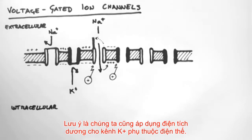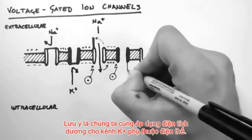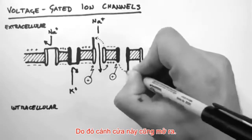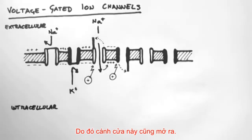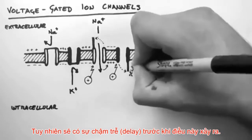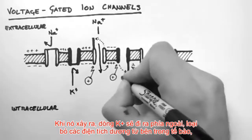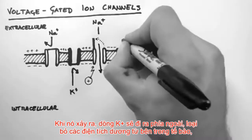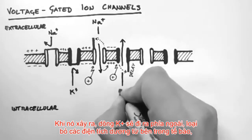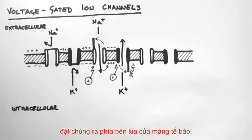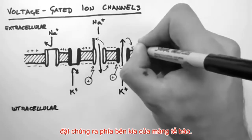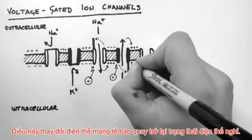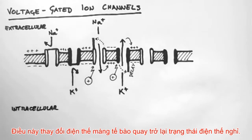Now remember that we also applied a positive charge to the voltage-gated potassium channel. Well this also flips open, but there is a delay before this happens. But when it does happen, the potassium rushes out, removing positive charges from the cell, and placing them on the other side of the membrane. And this returns the membrane potential back toward the resting membrane potential.